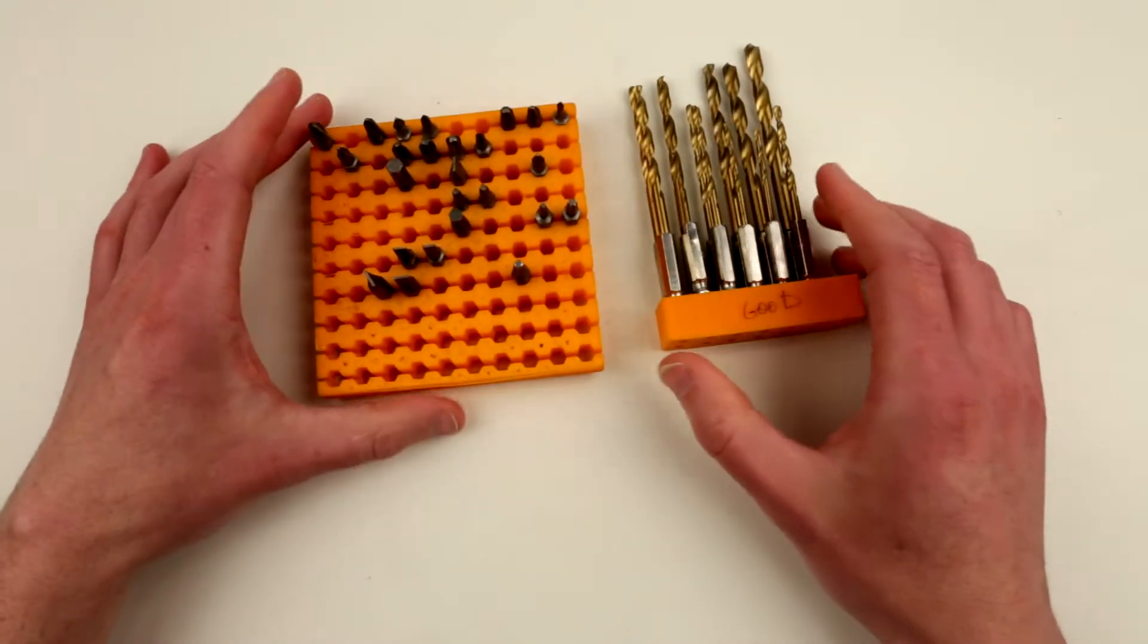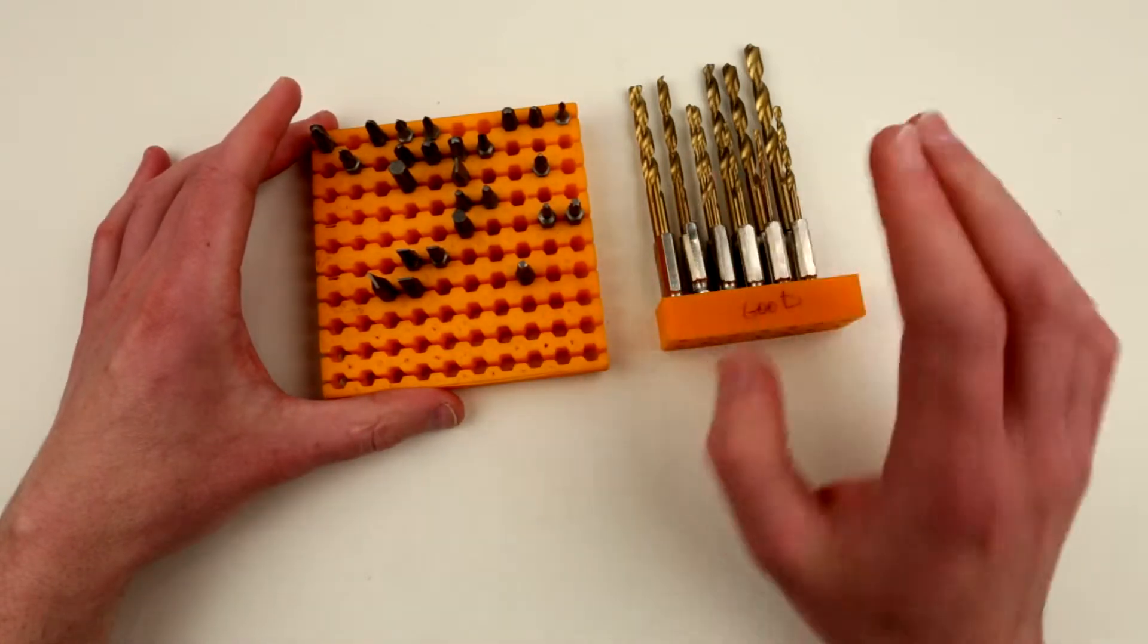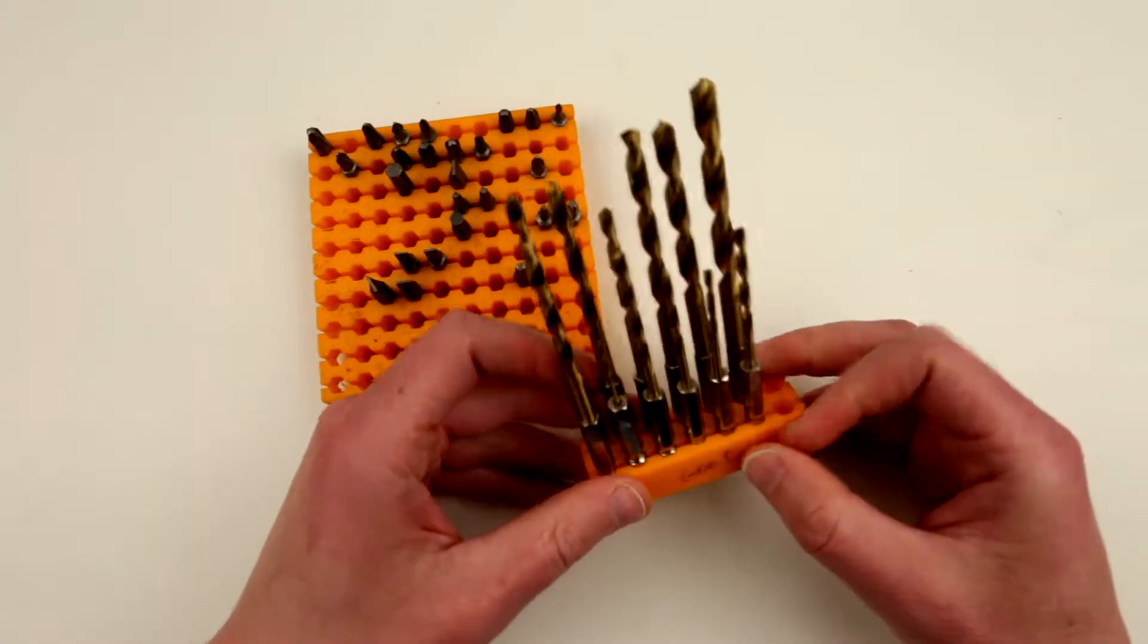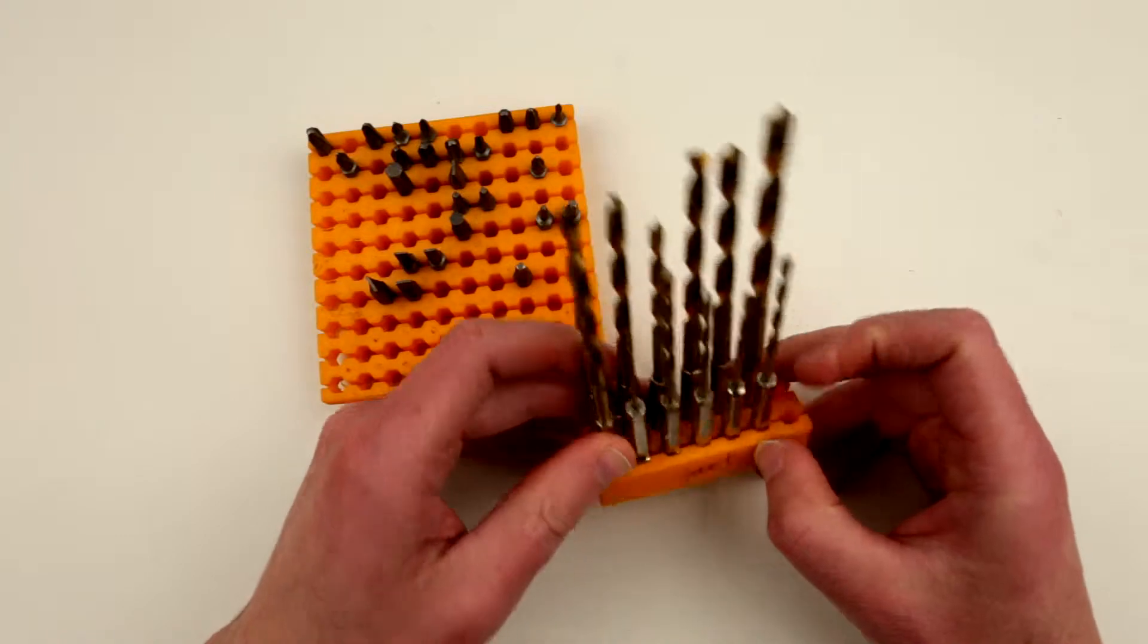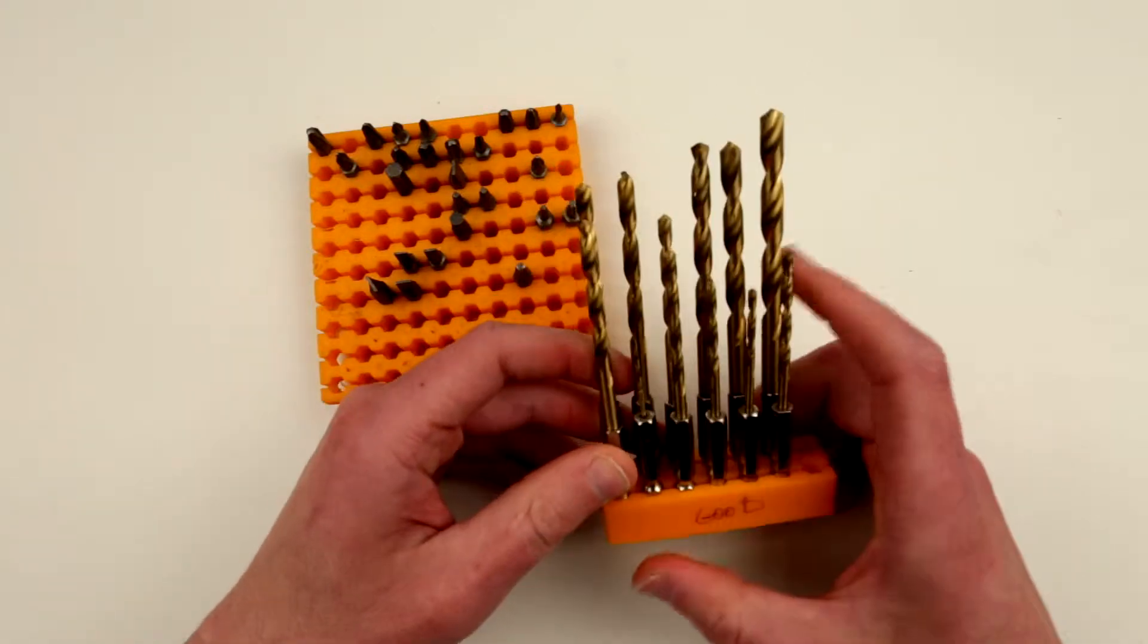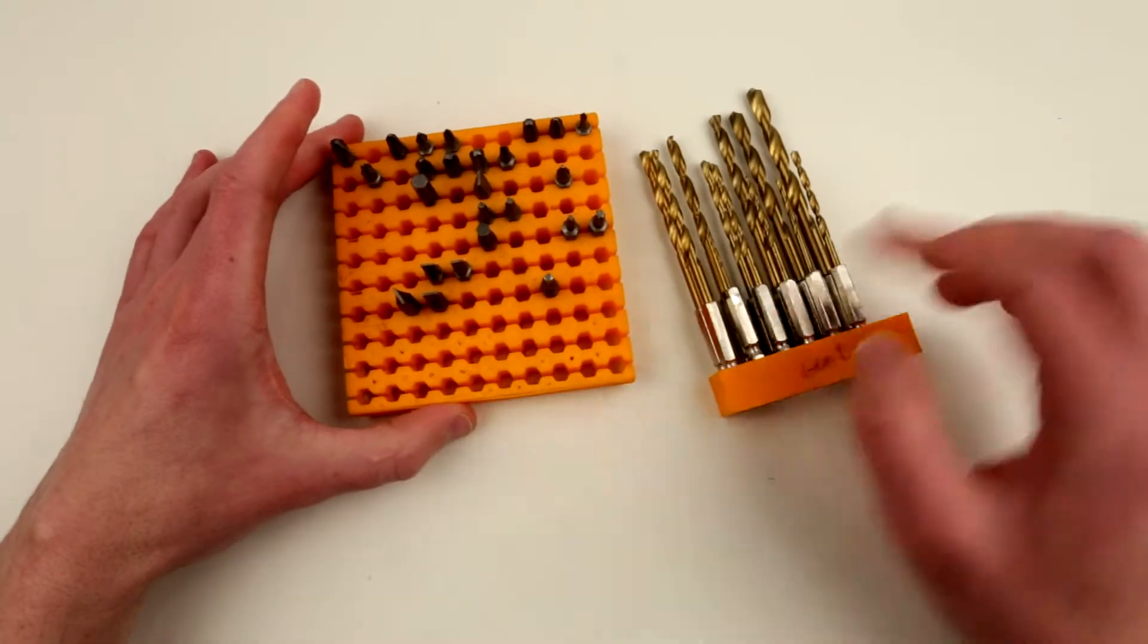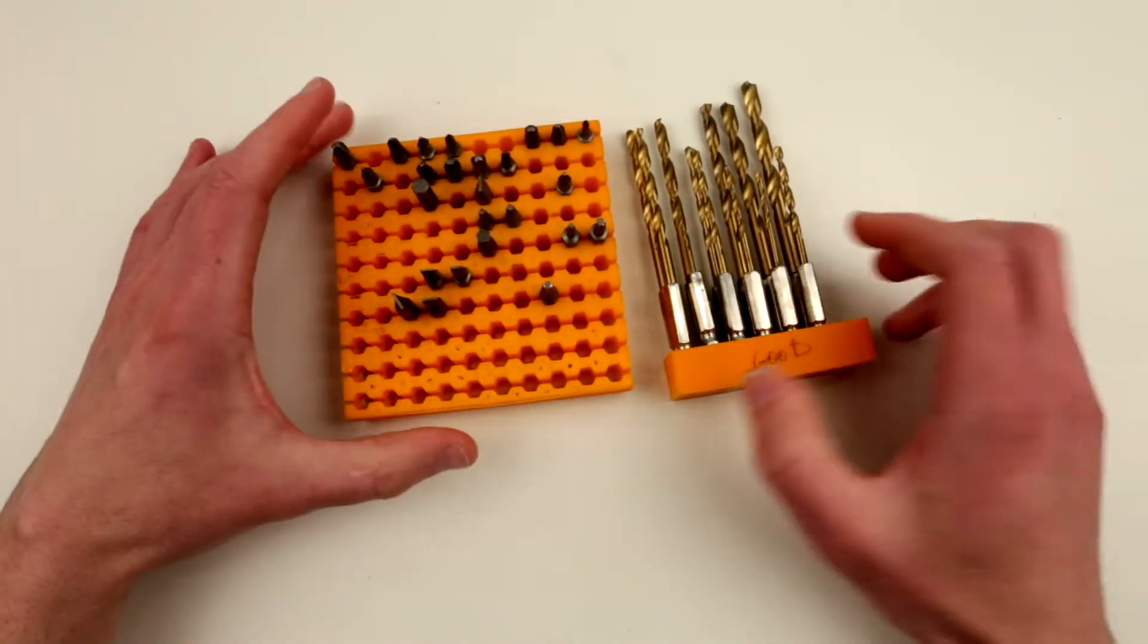People actually printed many different variations of this hex bit holder. Some of them are designed in such a way that they can support tiny three millimeter hex bits. You can print bigger and smaller ones and combine them in one box or in a drawer, things like that.